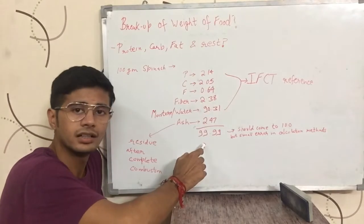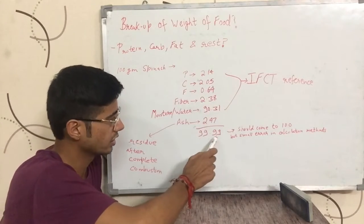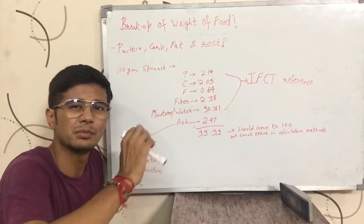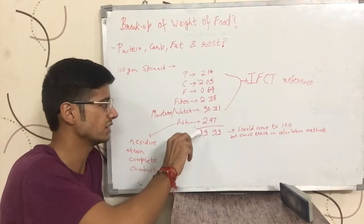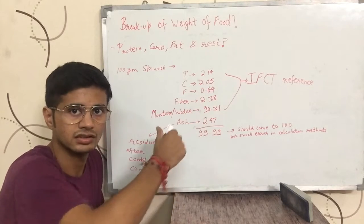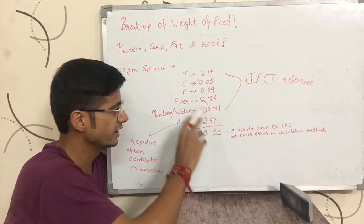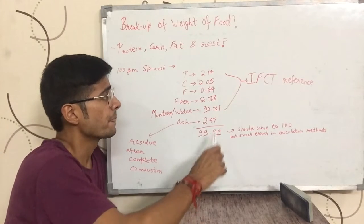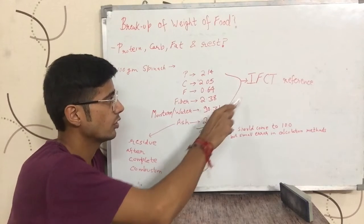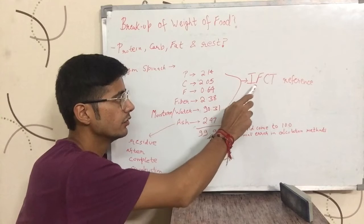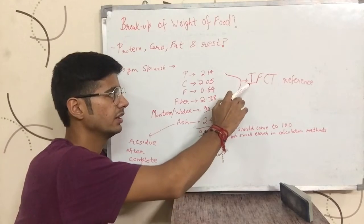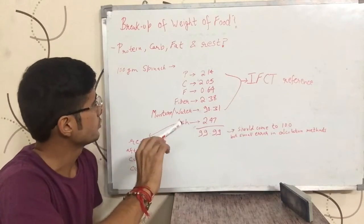If you sum these numbers up you should get 100, but here you are getting 99.99 because the methods used to calculate these values have some really small errors — for example, the ash value can be 2.46 or 2.48. It should ideally be 100. I have taken these values from IFCT — Indian Food Composition Tables — I have made a video on this previously, you can search on my channel.